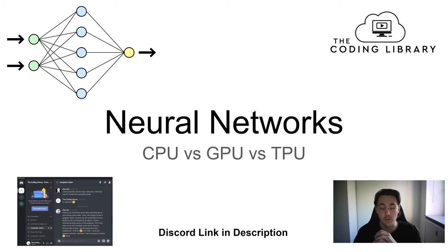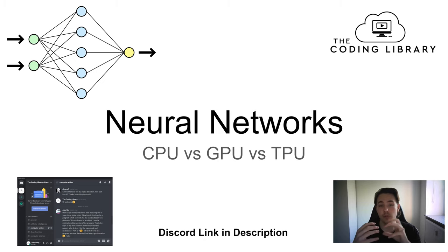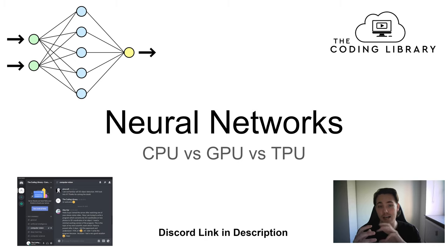Hey guys, welcome to a new video in this Neural Networks and Deep Learning tutorial. In this video, we're going to do a test of the CPU versus the GPU and TPU, where we're going to train neural networks in Google Colab. We're going to see the performance and efficiency of training on all three hardware types, how long it takes, and do a comparison of them.